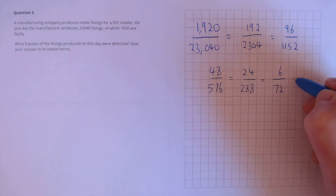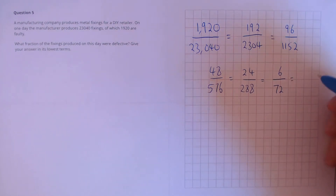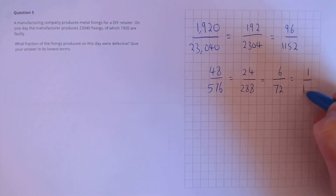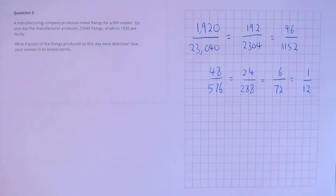Finally, our last cancellation. Both of these numbers divide by 6 to get 1 over 12. That's our final answer.